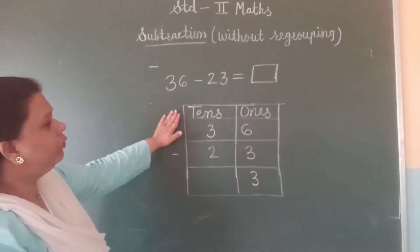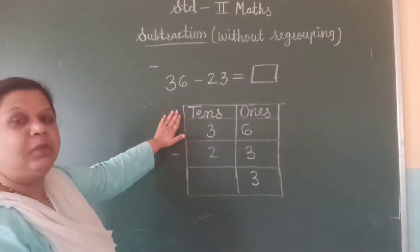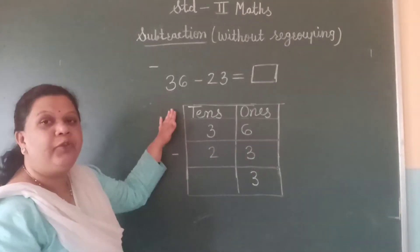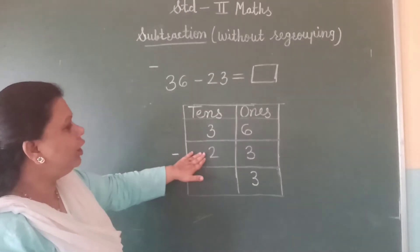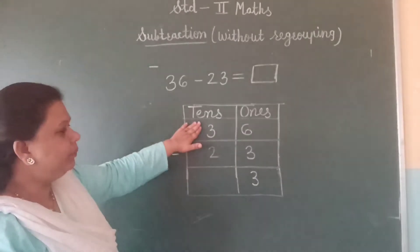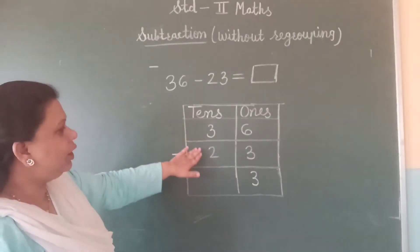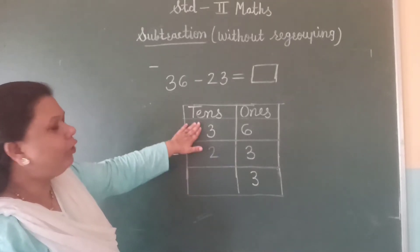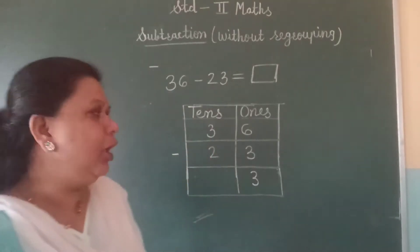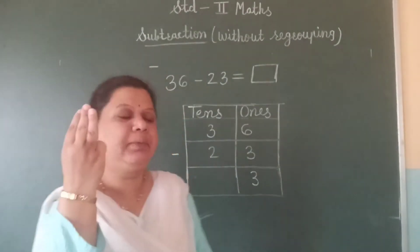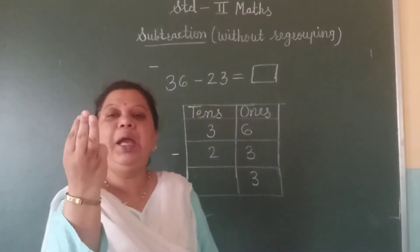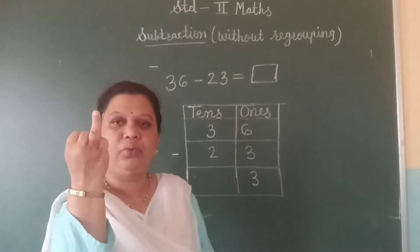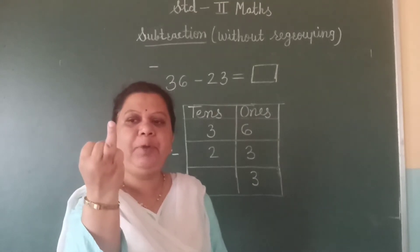Now, let us subtract the tens place. We are supposed to subtract the lower number from the upper number. Here, two is the lower number and three is the upper number. So, let us subtract two from three. For this, take your three fingers. Minus your two fingers — one, two. One finger is left over.